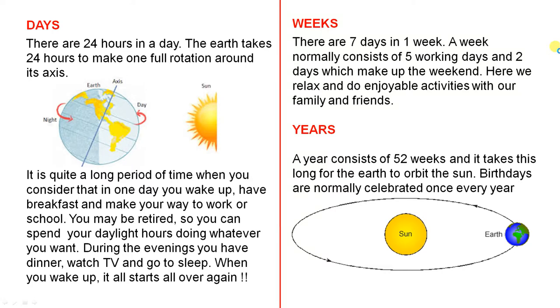A year consists of 52 weeks and it takes this long for the Earth to orbit the Sun. Birthdays are normally celebrated once every year.